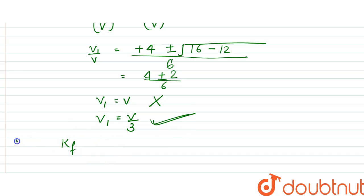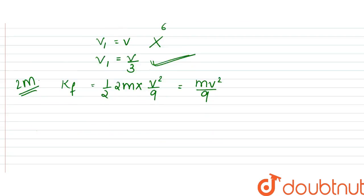write that the final kinetic energy for the 2m mass would be equal to half into 2m into v₁², that is v²/9, so that is equal to mv²/9. Right, so now the loss,